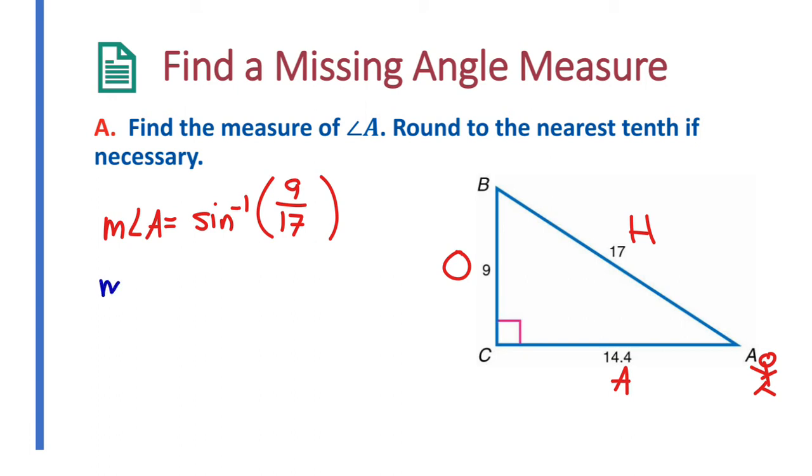So when you do that, we can round that angle. The measure of angle A is approximately 32 degrees, rounded to the nearest tenth. So that would be my answer.